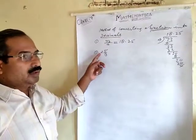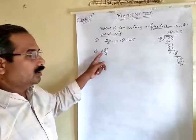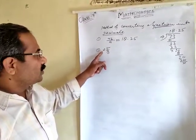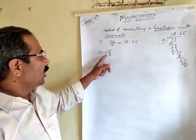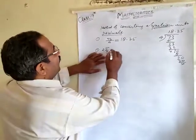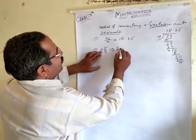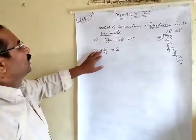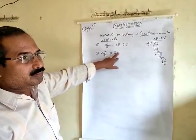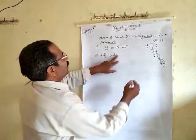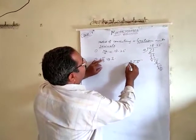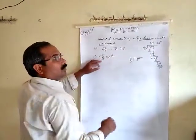Now we should try to solve this given fraction. Since it is a mixed fraction, first of all you should change it into a proper fraction, or you can write the whole number as usual and after that use the decimal point. Now you should divide 5 by 8, as you have done in the first question.